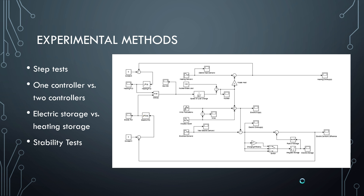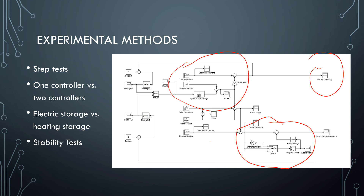First, we started out with step tests to see how the system responded to our changes. You can see here — this is our electric battery, this is our heating oversupply, and our heating system is over here. These are the wind inputs coming in, and we made changes to our nuclear load base right here.